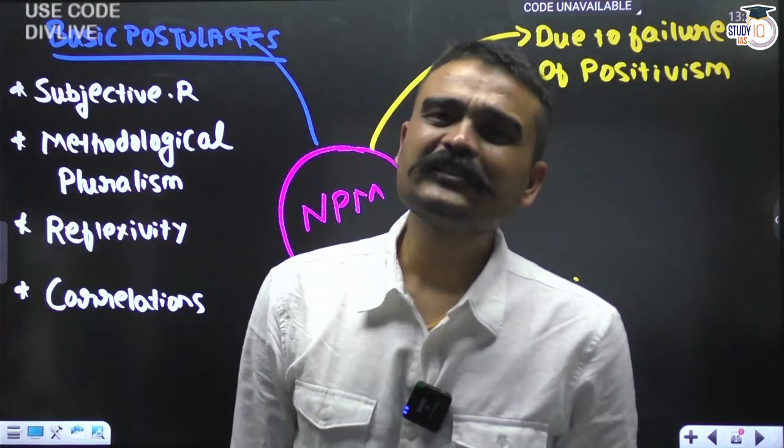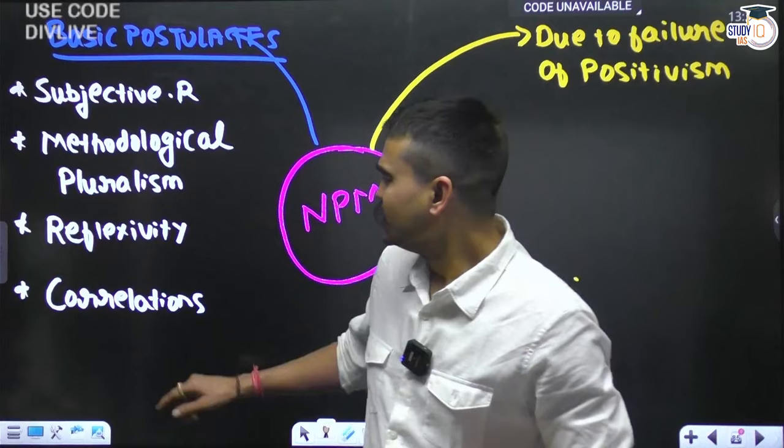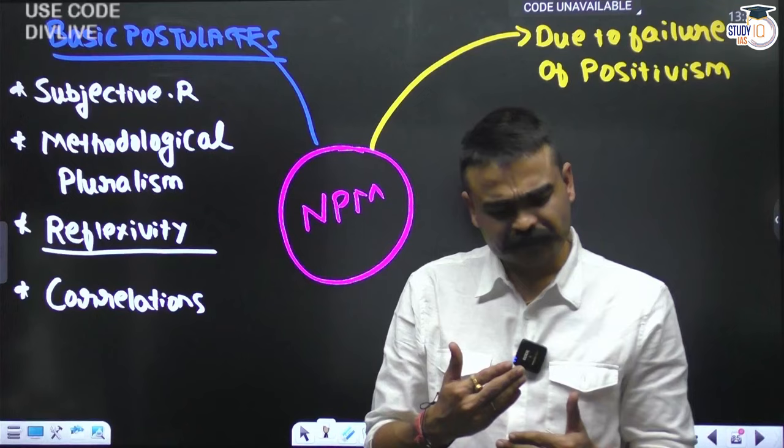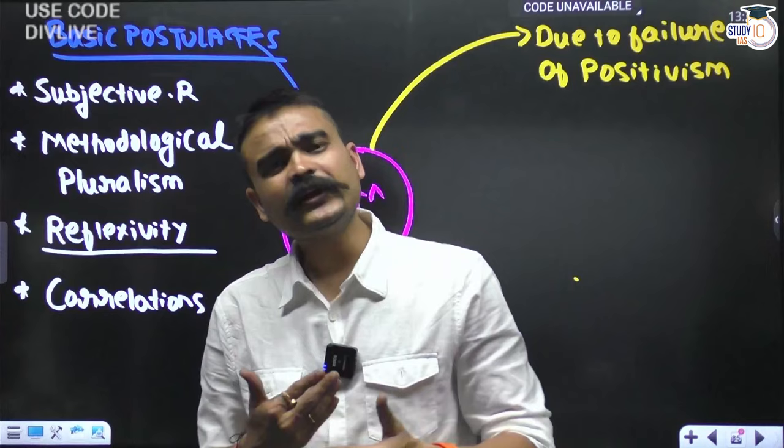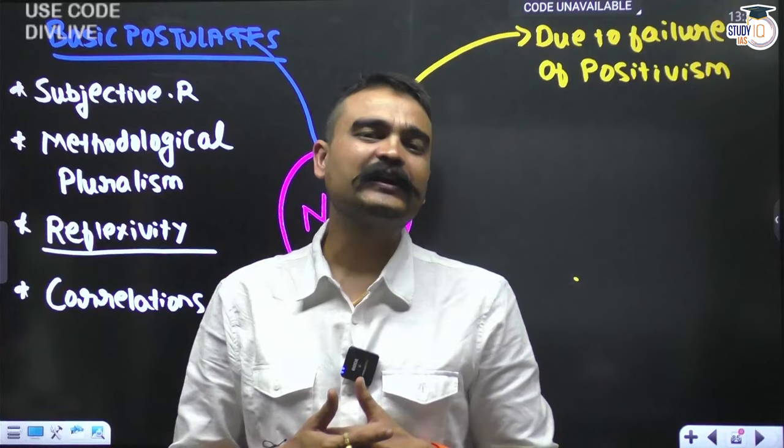What does objective reality mean? It means reality is fixed, stable, in equilibrium, consistent. Non-positivists say reality is subjective - why? Because they recognize the reflexivity present among individuals. When a person acts thoughtfully according to their own interests, the actions of individuals would vary, and the nature of reality created over a period of time would not be consistent.